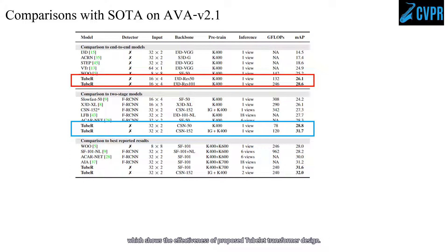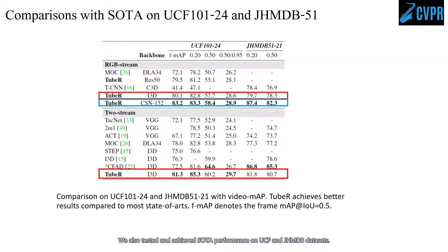This shows the effectiveness of the proposed tubelet transformer design. TubeR also outperforms all previous two-stage SOTAs, even with tricks like multi-scale crop as shown in blue. We also tested and achieved SOTA performance on UCF and JHMDB datasets.